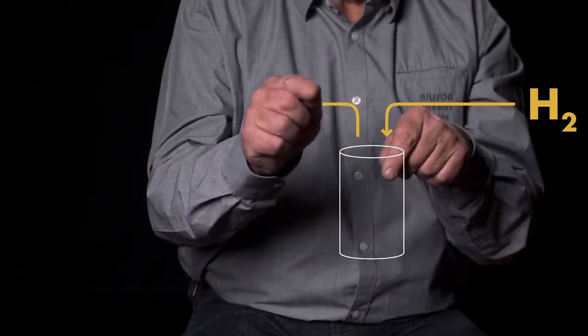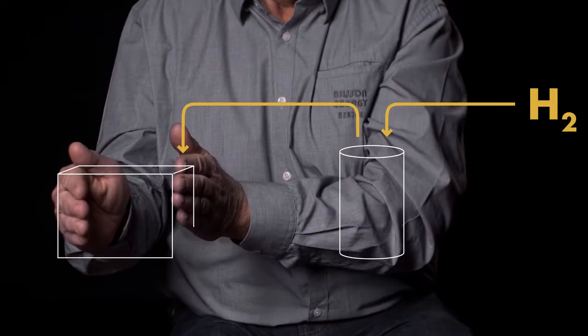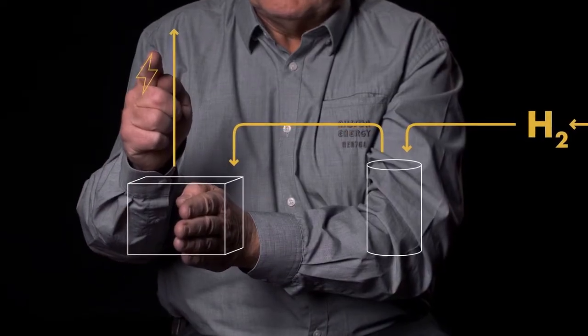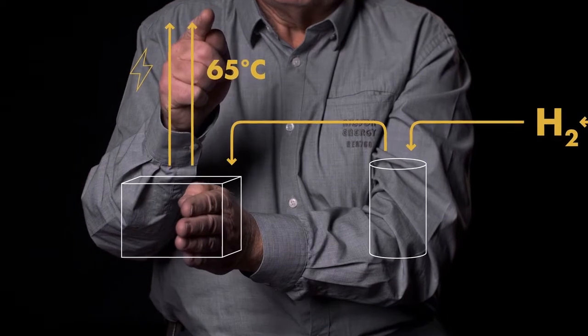When there is a need for energy, hydrogen is fed from the cylinder to a fuel cell. Out of the fuel cell we have electricity and the by-product thermal heat at 65 degrees C.